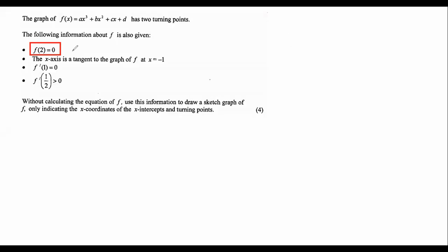It's telling you when x is 2, then the y value is 0. That is an x-intercept. That is a mathematical way to say x-intercept.